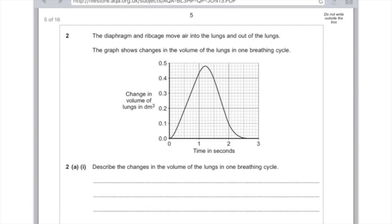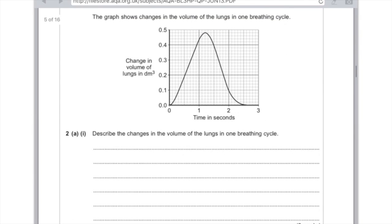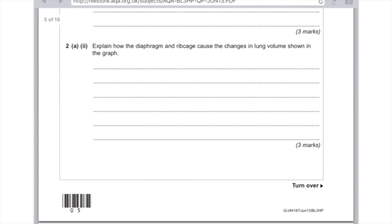Question 2. The diaphragm and rib cage move air into the lungs and out of the lungs. The graph shows changes in the volume of the lungs in one breathing cycle. Describe the changes in the volume of the lungs in one breathing cycle. You're describing, therefore you're saying what you see on the graph. And it's worth three marks, so make three separate points. So first of all, you want to say that the volume of the lungs increases and then decreases. The maximum volume occurs at 1.2 seconds. And after that point, the volume decreases all the way down to zero. And that occurs at about 2.5 seconds. Explain how the diaphragm and rib cage cause the changes in the lung volume shown in the graph. First of all, the volume of the lungs increases when the rib cage moves upwards and outwards and the diaphragm flattens. You want to say that the lung volume then decreases when the diaphragm moves back up and the rib cage moves in, causing the volume to decrease.